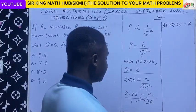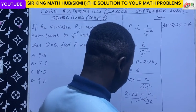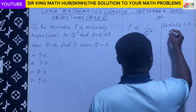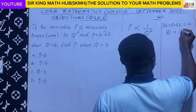36 times 2.25, you have 81. It's equal to k.